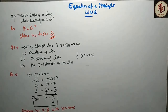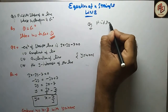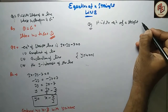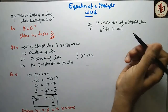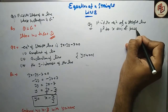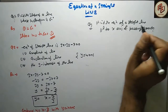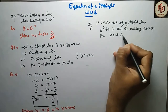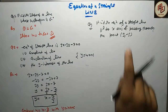y-intercept का मतलब c की value होती है। अब एक और question लेते हैं: find the equation of a straight line parallel to x-axis and passing through the point (3, minus 5).